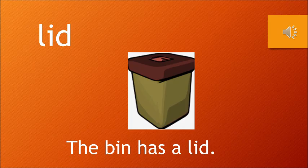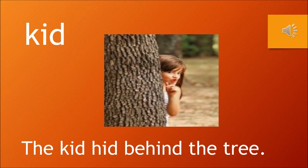The first word we have taken is lid. The sentence is: the bin has a lid. Can you see the bin? It has a lid — it has a cover. Now moving on to the next one: kid. The kid hid behind the tree. Can you see the small girl? She is a kid, and she is hiding behind the tree. The sentence is: the kid hid behind the tree.